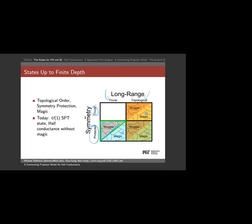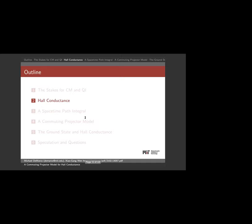That's the big overview of how I want to think about the classification of states. Before we get into Hall conductance, a question about Kitaev's chain: a 1D Kitaev chain would be long-range ordered because of the fractionalization of Majoranas — it lives on the topological side of the column.